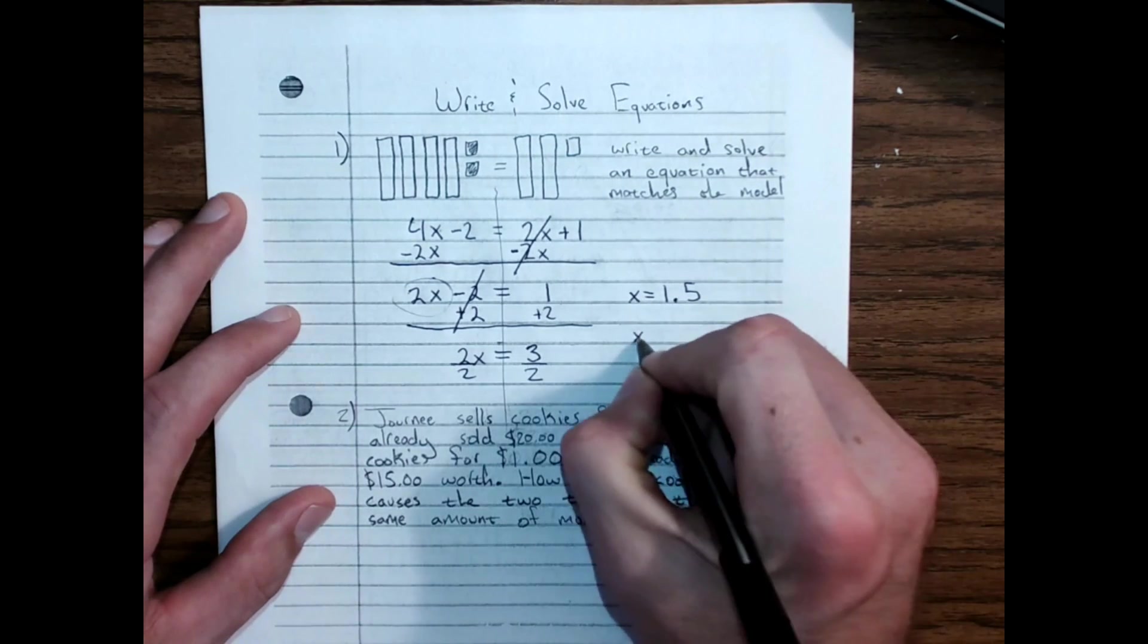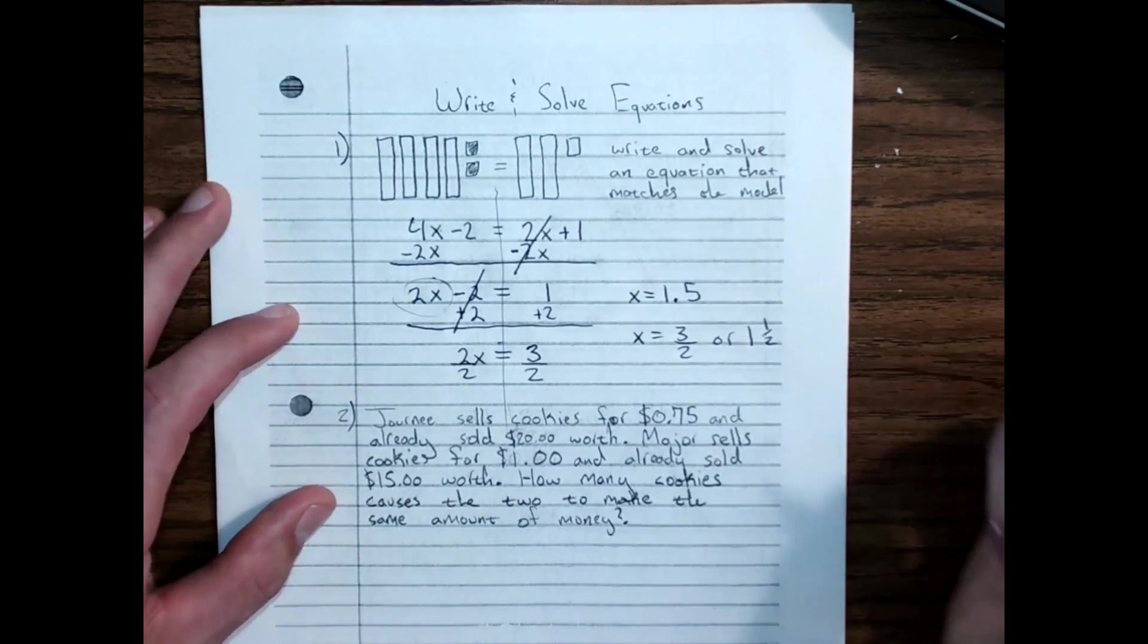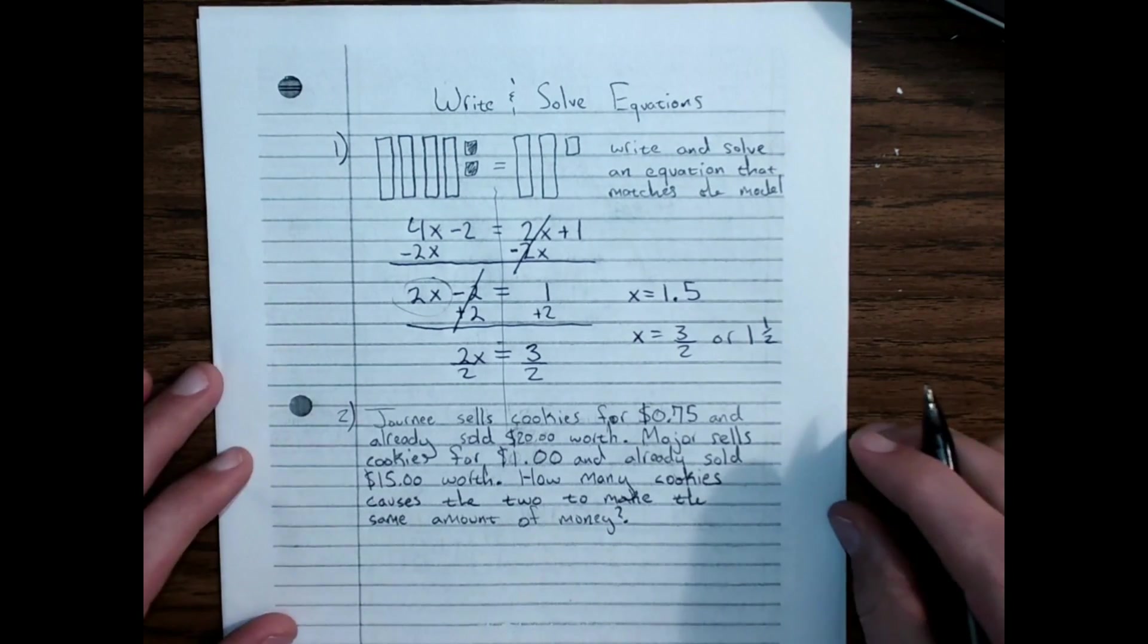And you should end up with x equals 1.5. Or, if you had x equals 3 halves, or 1 and 1 half, all three of those are acceptable answers.